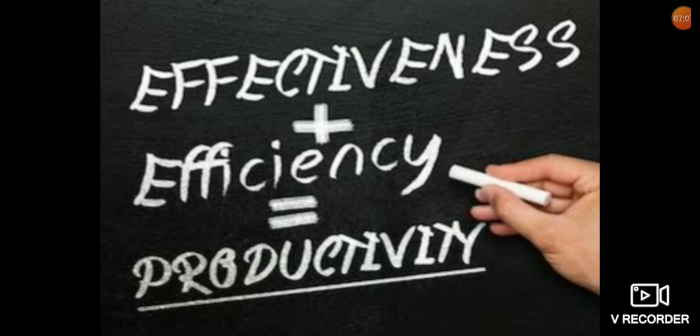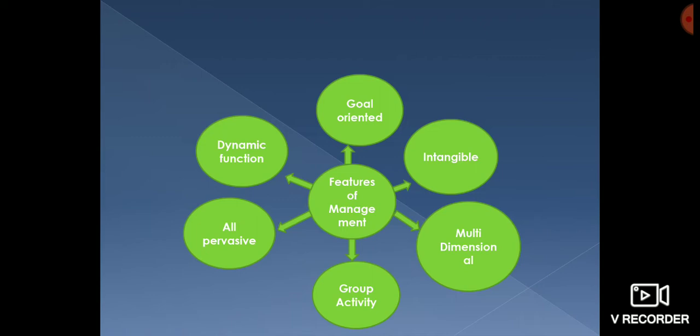The main motive of an organization is always to earn profit. Now we come to the features of management. Management consists of six features. The first is goal-oriented process. An organization has a set of simple and clearly stated goals which are the basic reason for its existence. Management unites the efforts of individuals in the organization towards achieving these goals, and it also comprises the goals of human beings who have joined the organization along with the organizational goals.